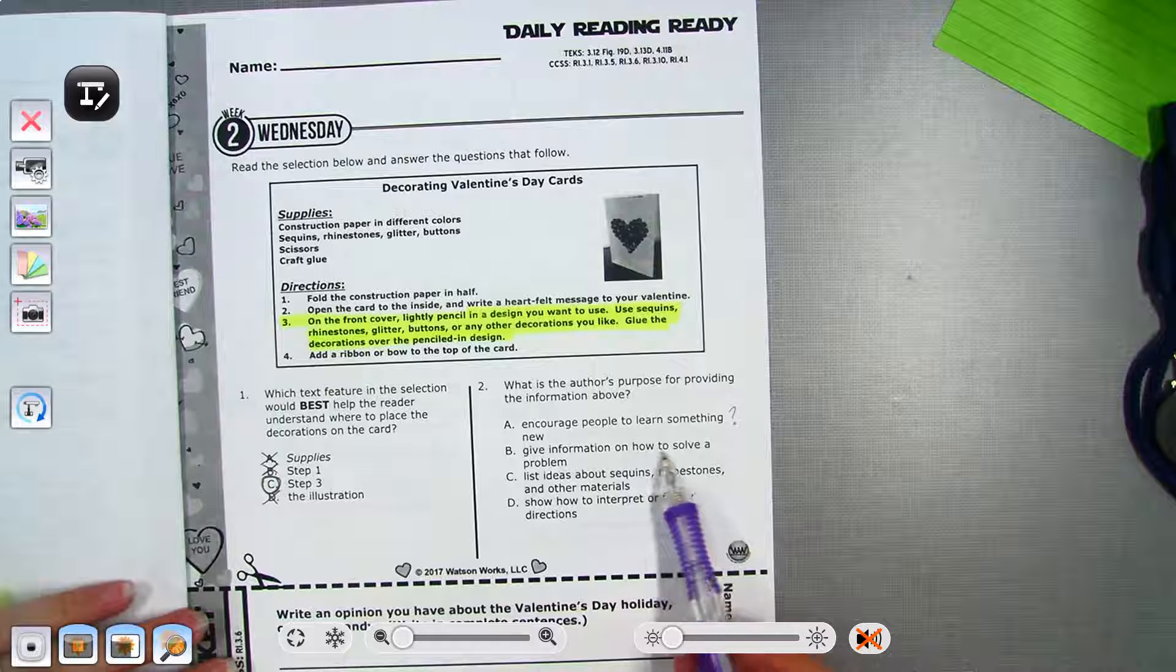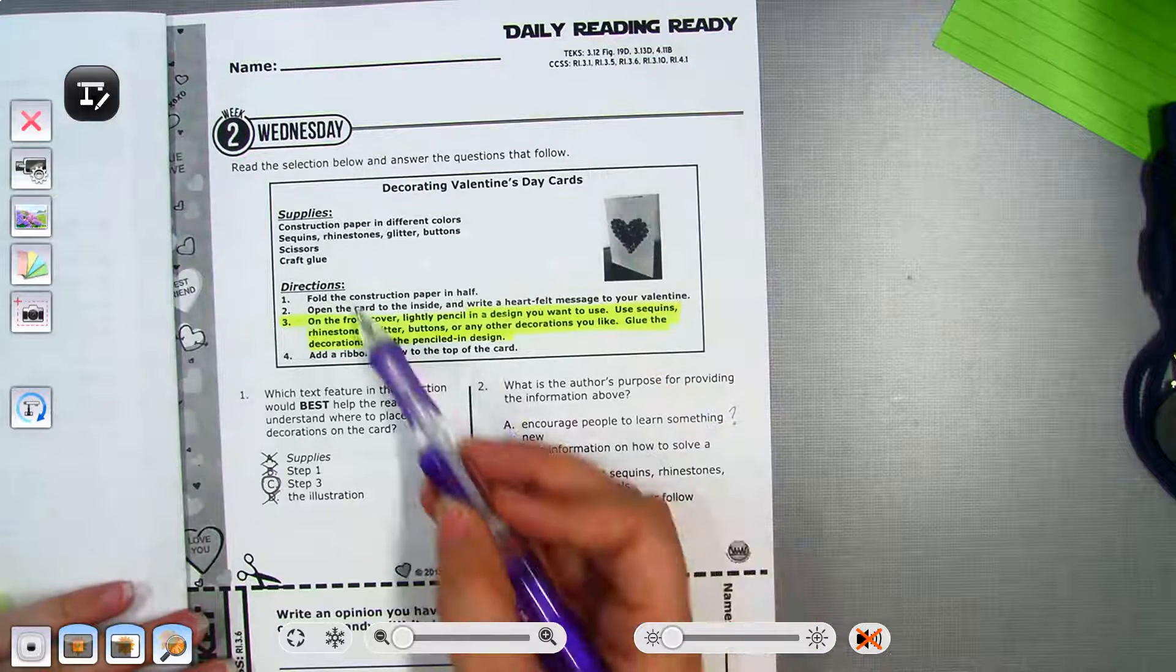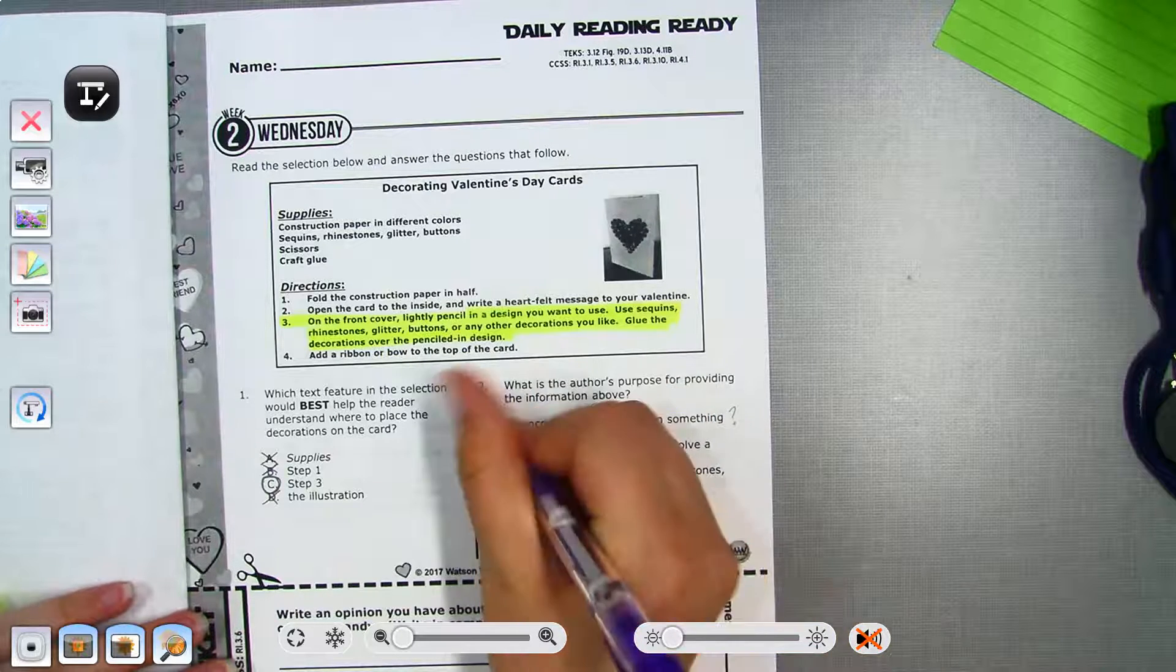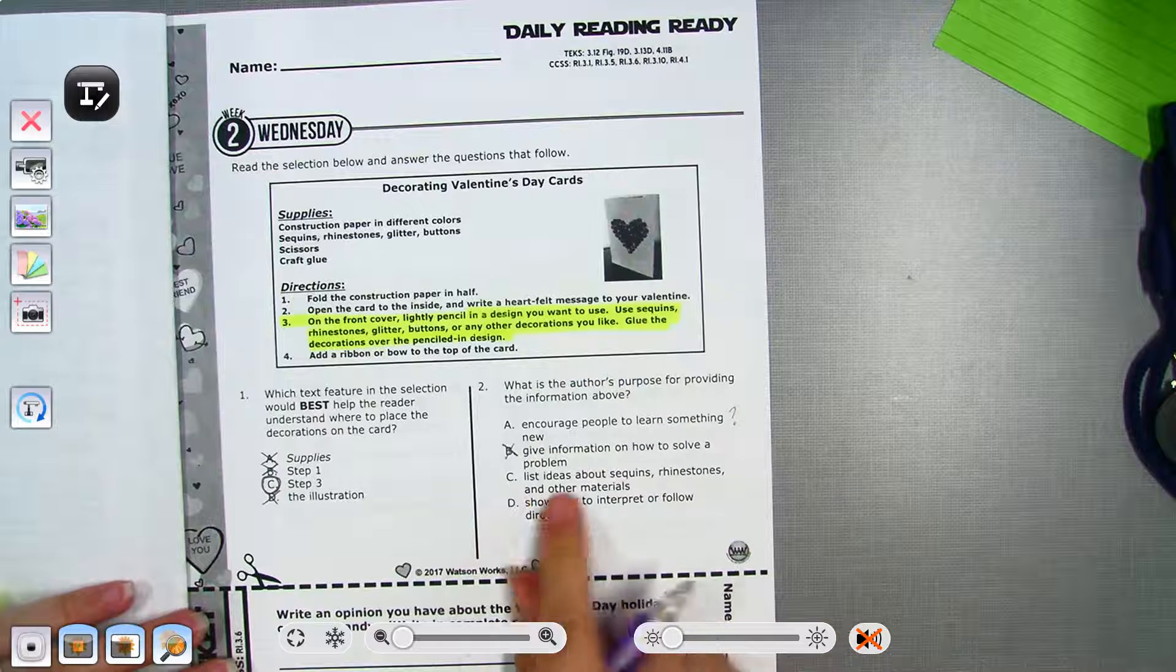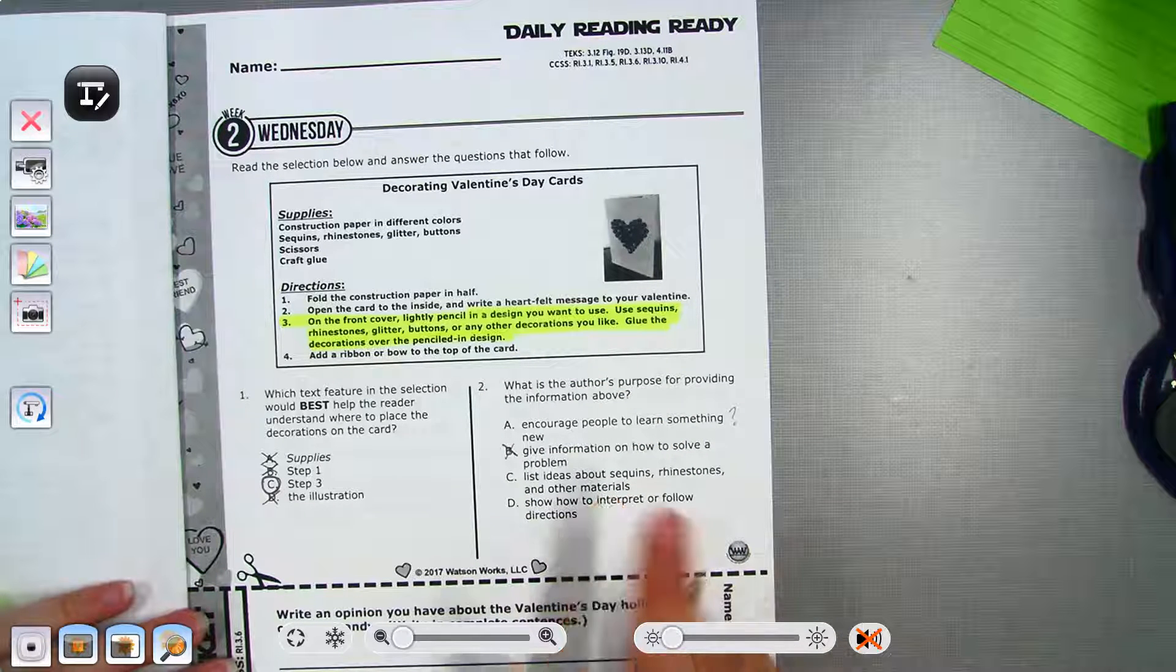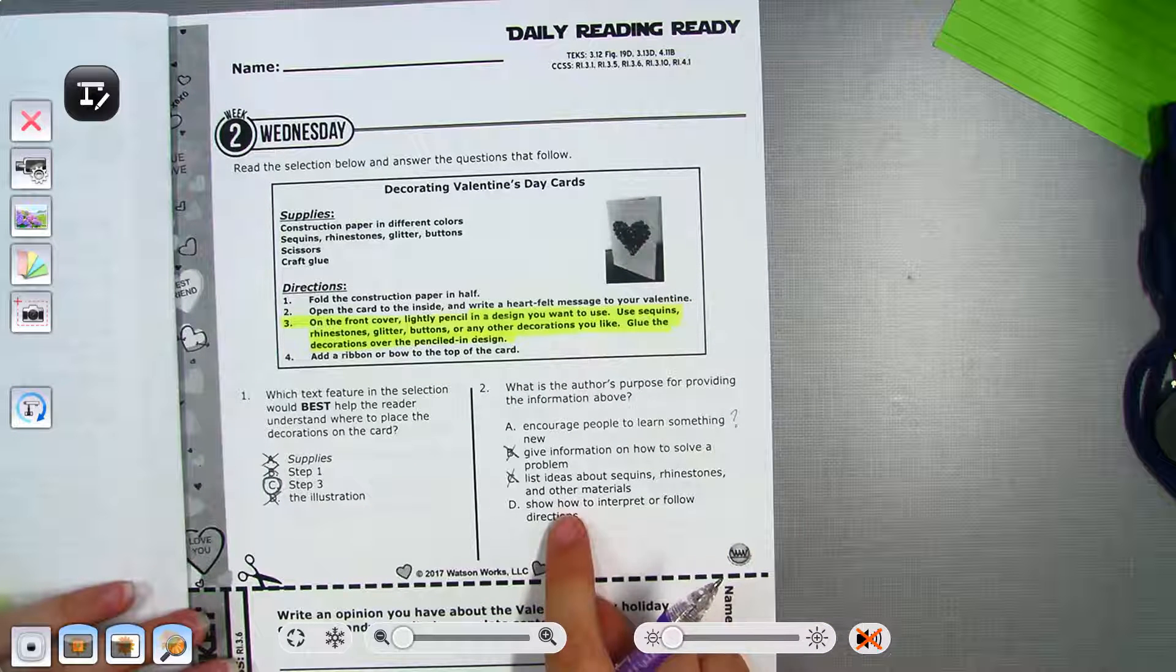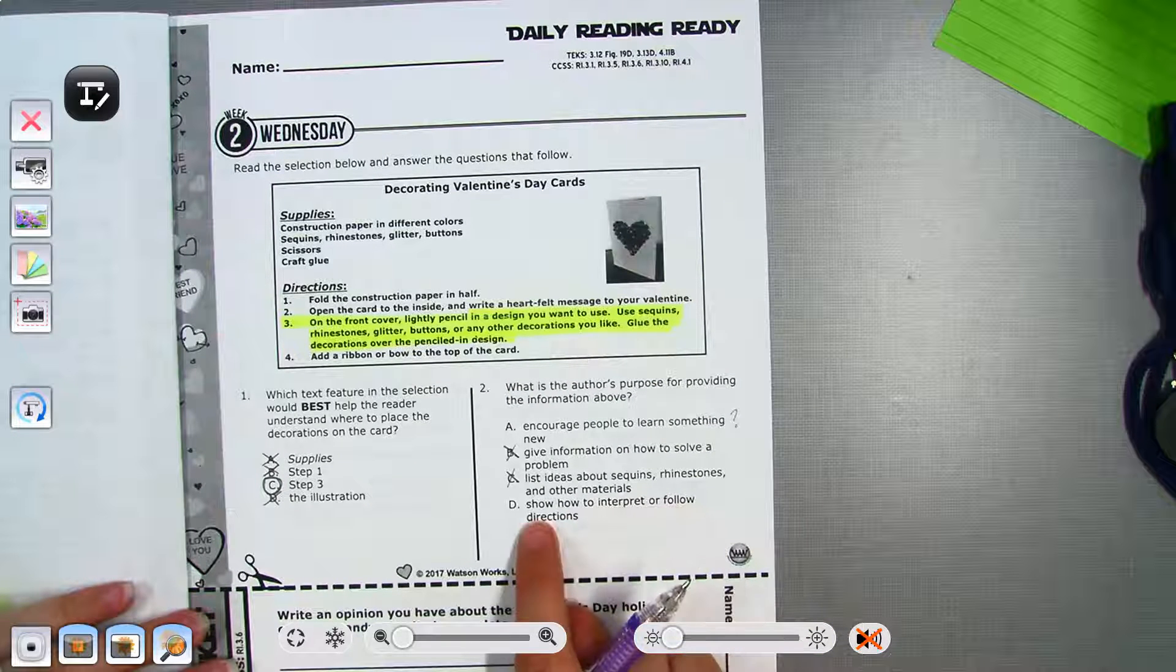Give information on how to solve a problem. Is this telling us how to solve a problem? Nope, it's telling us how to make something. List the ideas about sequins, rhinestones, and other materials. No, that doesn't tell us the ideas.